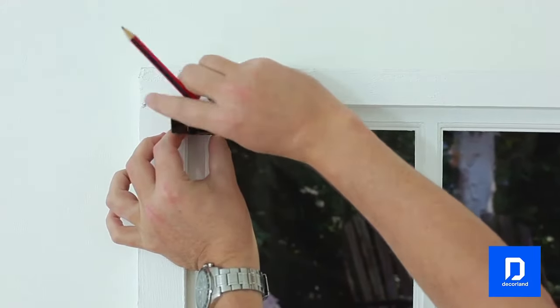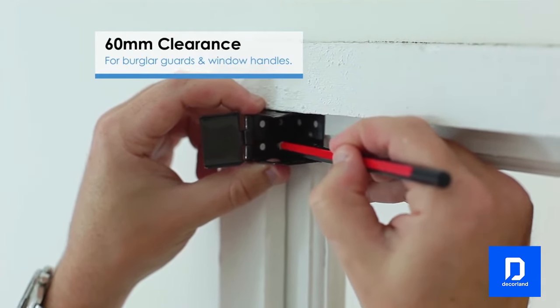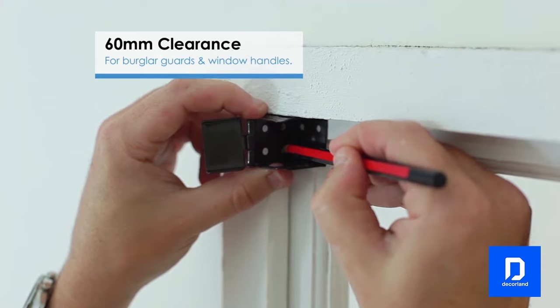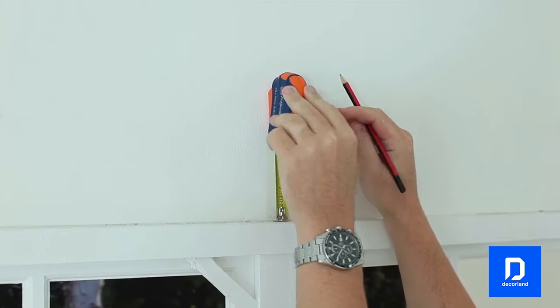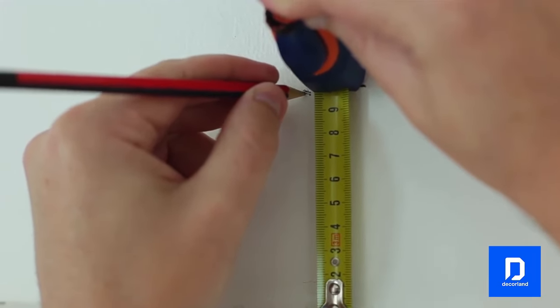You can install the Venetian blind in the window recess like such. Make sure you allow at least 60mm for clearance of burglar guards and window handles. Or you can install it on the wall face above the window, which is what we are going to show you in this video.